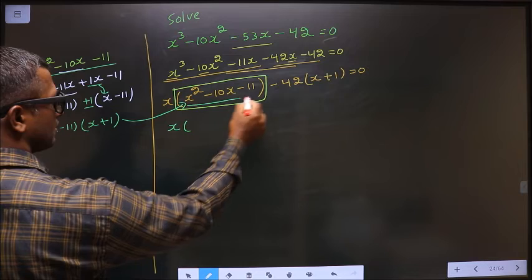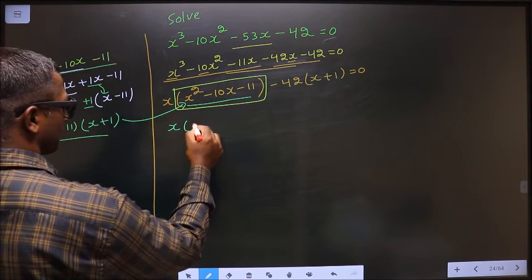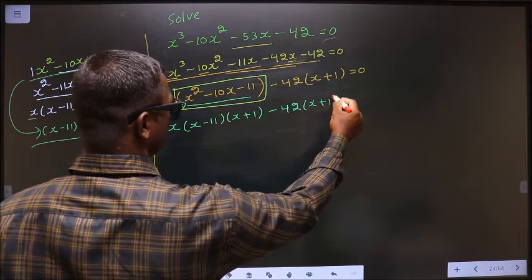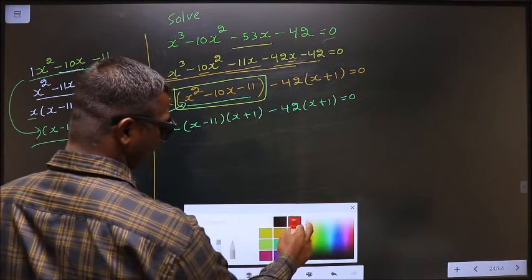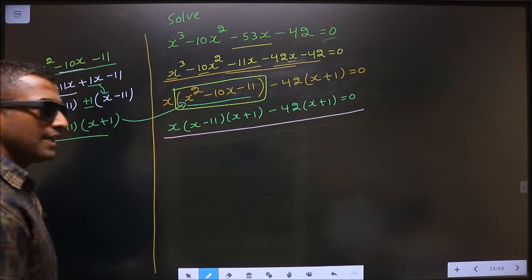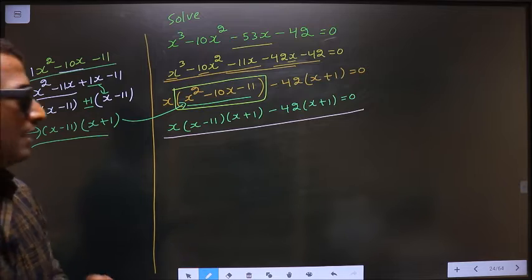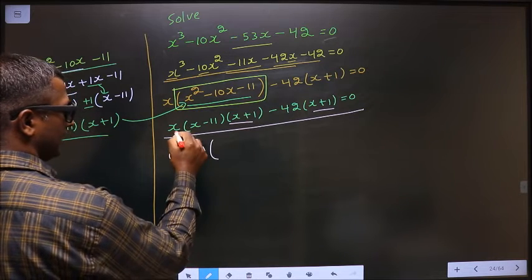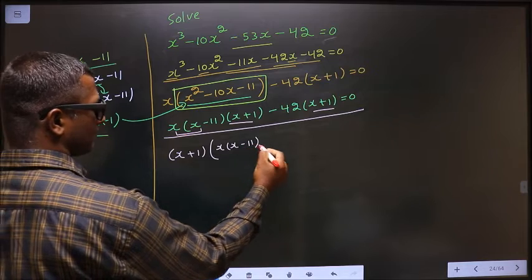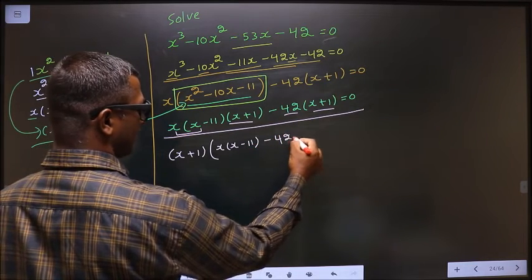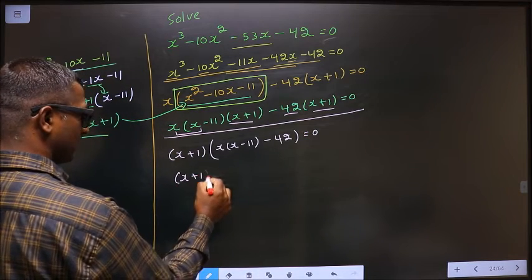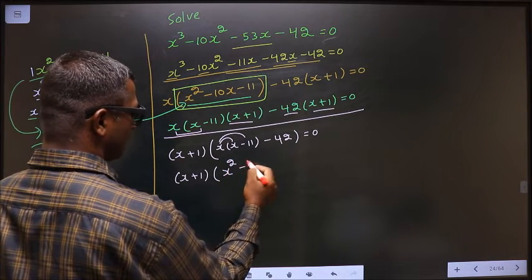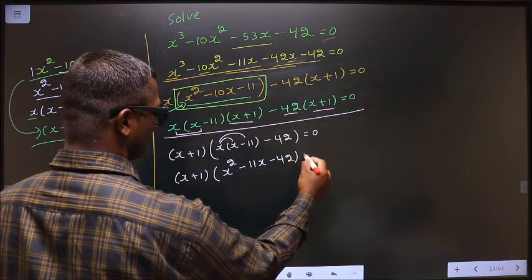In place of this quadratic, replace this over here. So here it is x, in place of this quadratic: x minus 11 and x plus 1, minus 42 times x plus 1 equal to 0. From this entire equation, what you can take out common is x plus 1. So here I am left with x times x minus 11, and here left with minus 42. Open up the bracket: x into x is x squared, x times 11 is 11x, minus 42 equal to 0.